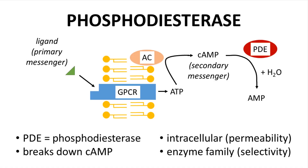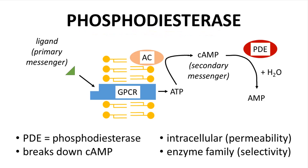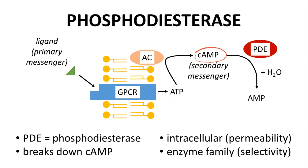Let's begin by introducing the target phosphodiesterase, which is a very common drug target. To understand why, let's look at a common cell signaling pathway. A ligand, as the primary messenger on the outside of a cell, binds a GPCR, G-protein coupled receptor. Within the cell, ATP is released and converted to cyclic AMP by adenylate cyclase.